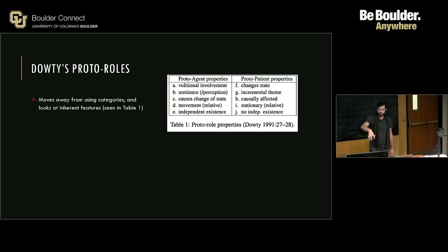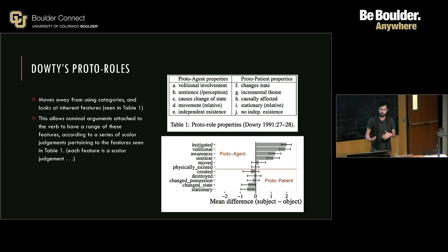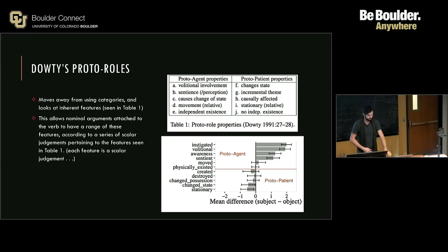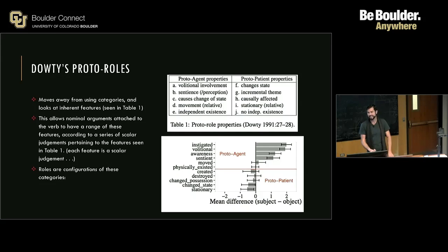Instead of putting things into buckets, it's saying it has this feature, it has a lot of this feature. This allows for arguments attached to the verb to have a range of these features. It's not just a predicate — any argument that attaches to the verb can have any of these features shown in Table 1. All of these can then operate according to a scalar judgment: how much volitional involvement does something have? How much does it change state? Et cetera. The roles that we know and use — these classifications and categories — are really configurations of these features. So an agent would have everything from A through E; that would be a prototypical agent with strong tendencies in these characteristics.